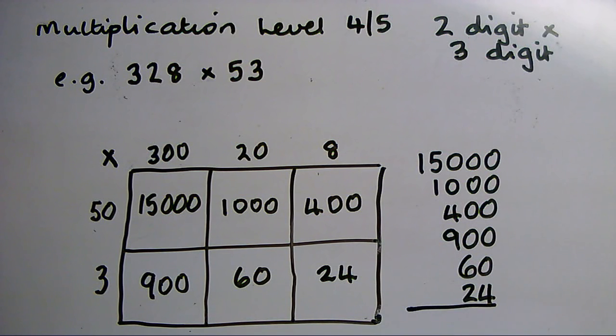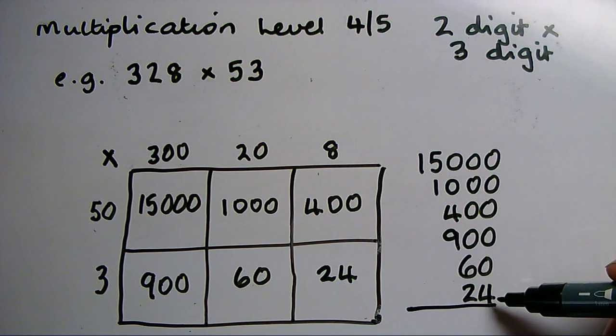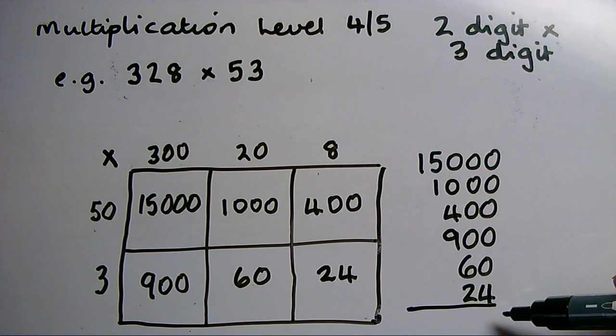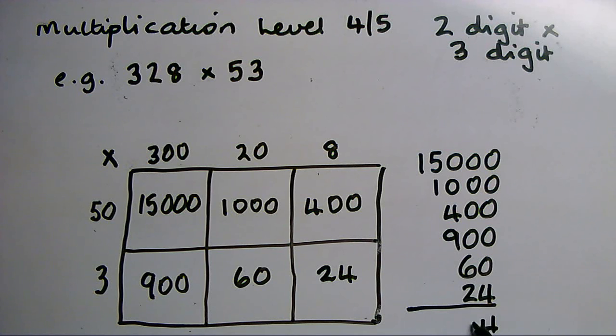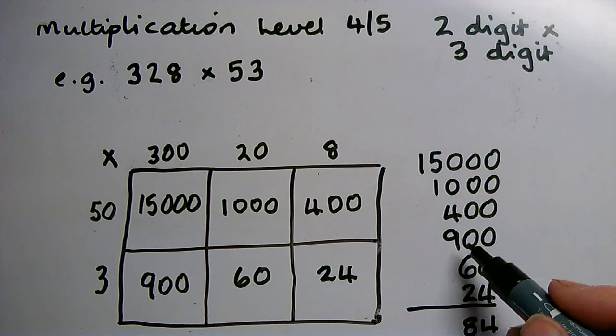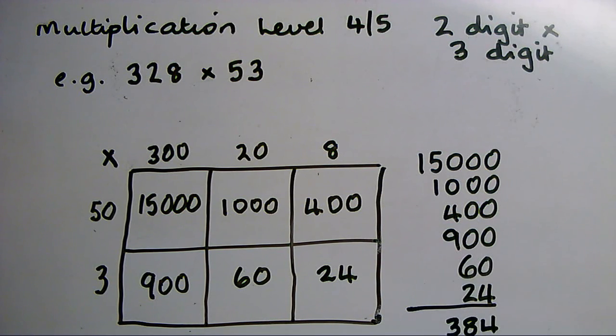Now I'm going to draw my line and add them. And again, I need to add using place value. I start from the units: 4 in that column. 6 and 2 is 8. 9 and 4 is 13. 5, 6, 7, and a 1 there, so...